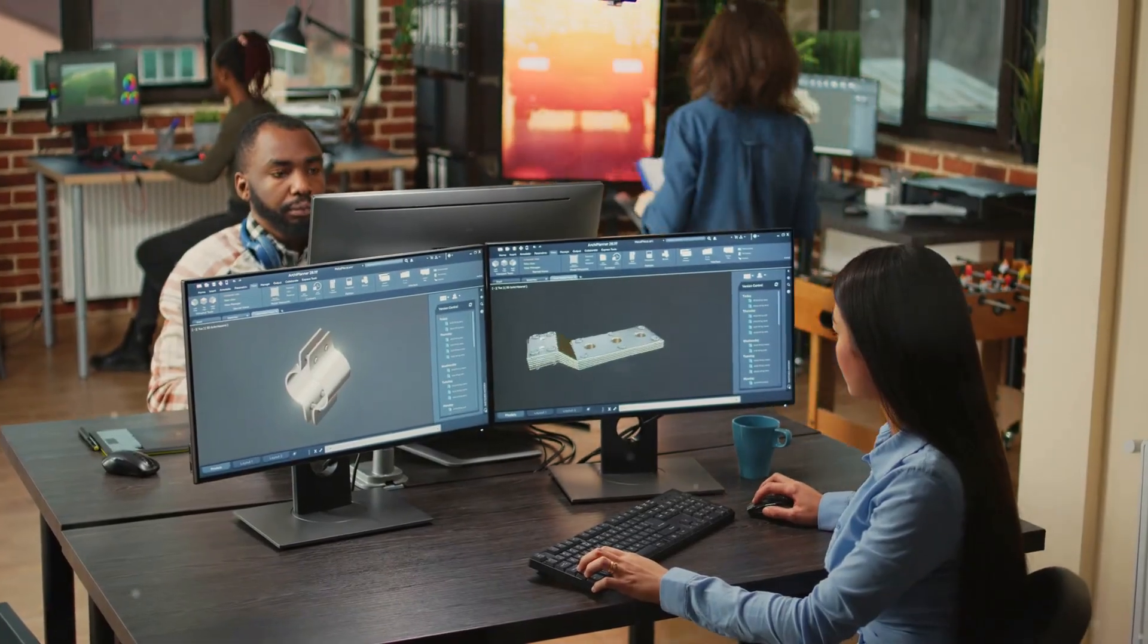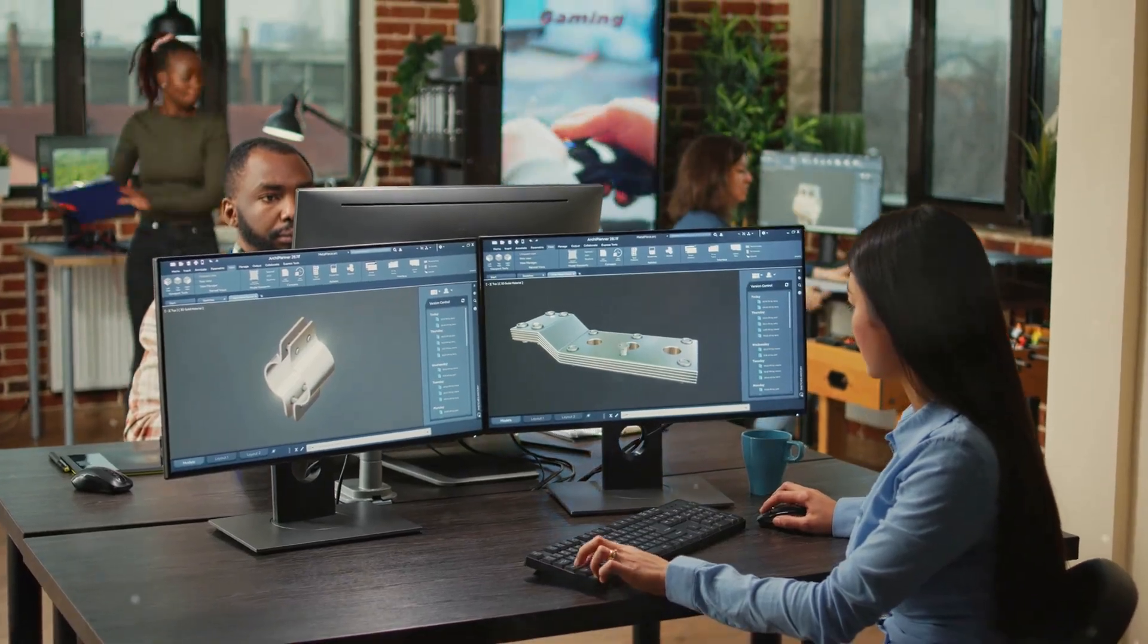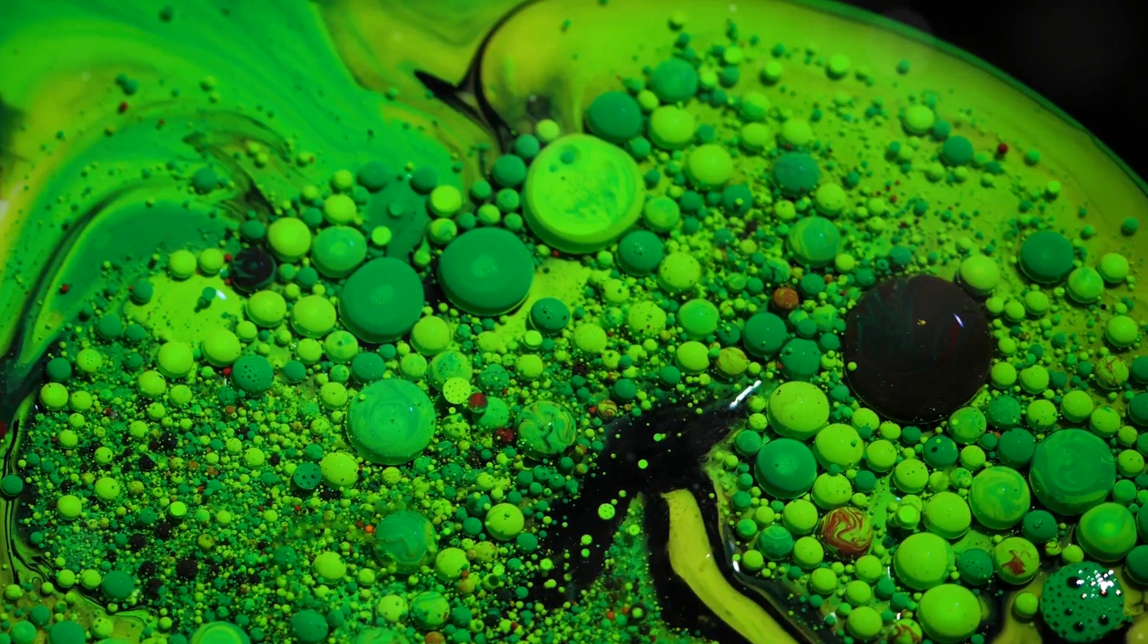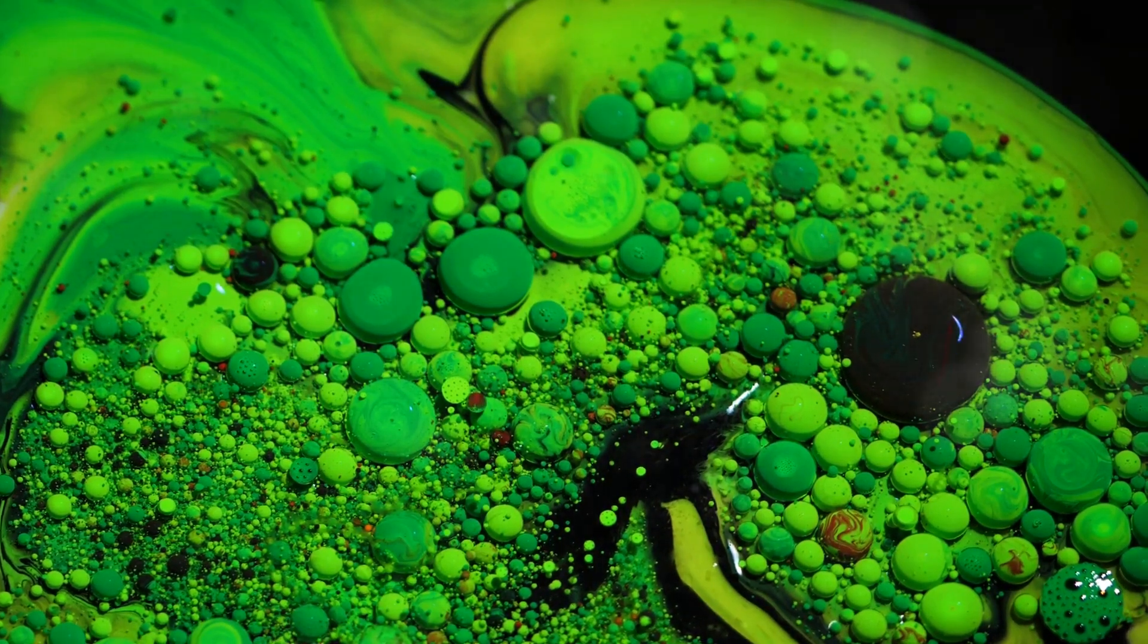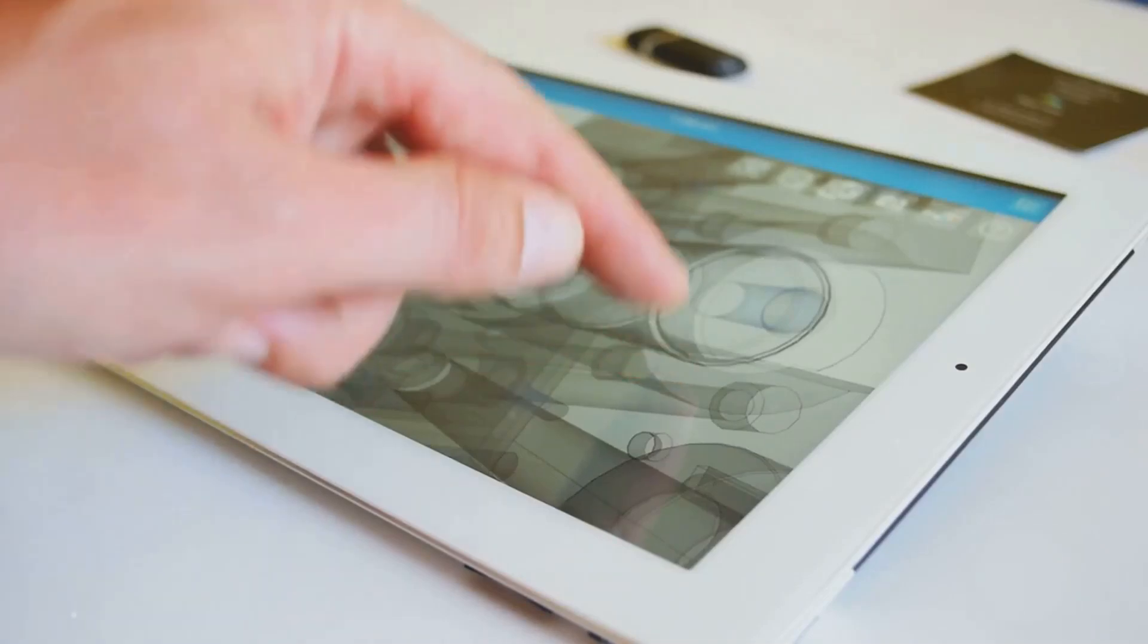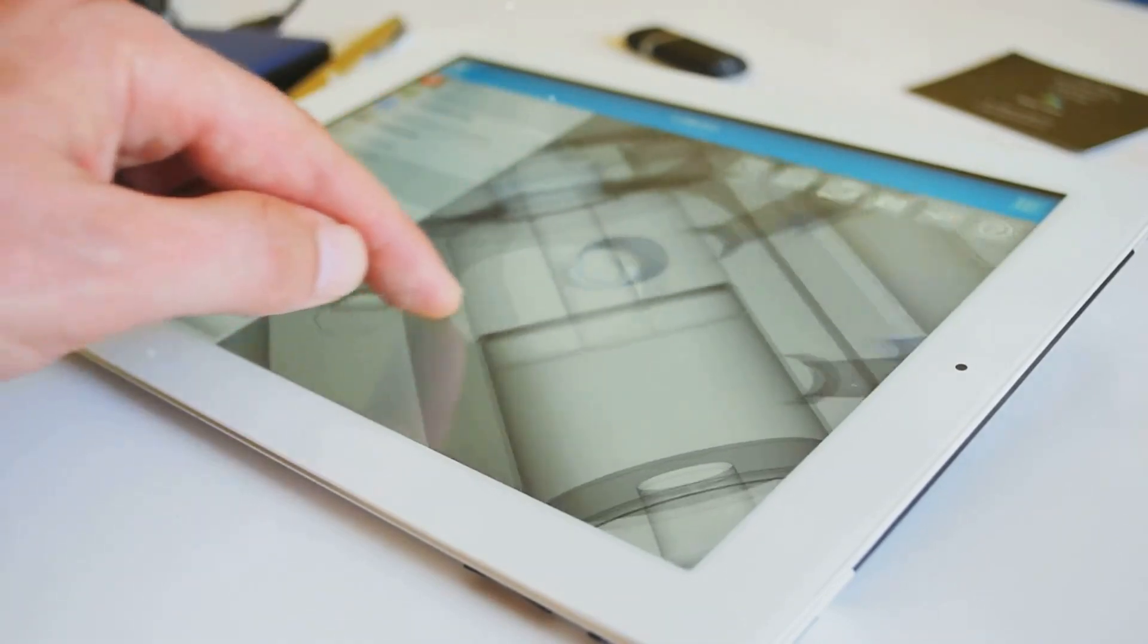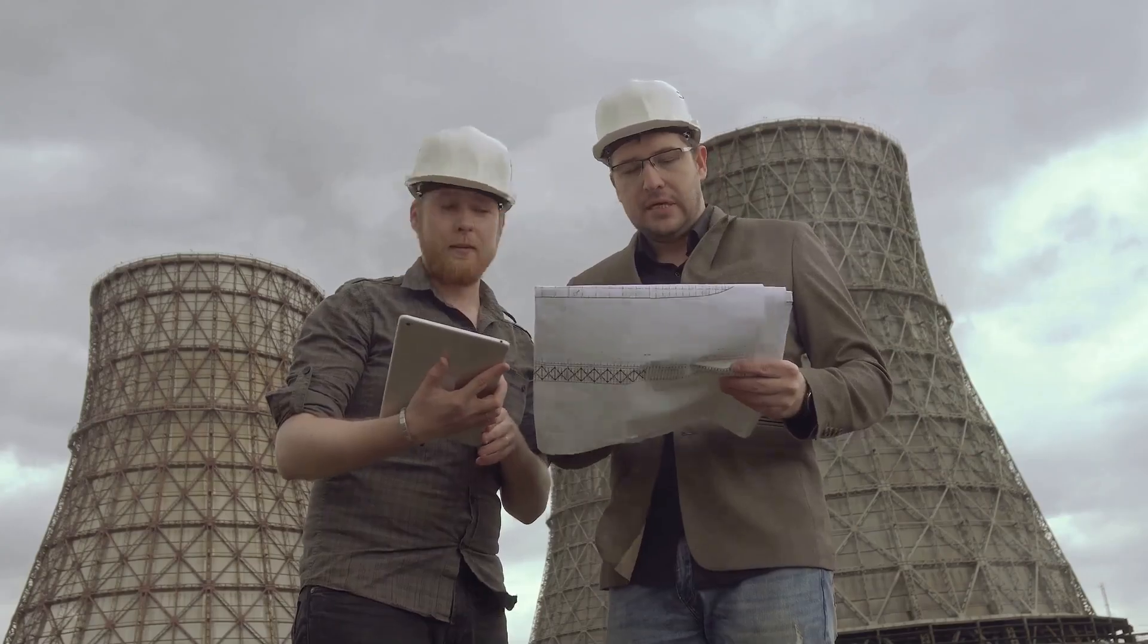Before we delve into the simulation itself, imagine constructing a virtual model of our PEM electrolyser. This is where ANSYS Fluent, a powerful computational fluid dynamic software, comes into play. Fluent allows us to create a digital twin of the electrolyser, a virtual playground to experiment and optimize. We begin by defining the geometry of the electrolyser, meticulously outlining the dimensions and shapes of its components: the flow channels, the porous electrodes, and the all-important membrane.